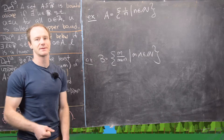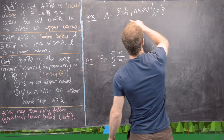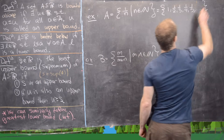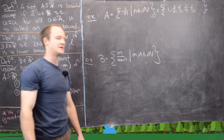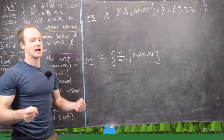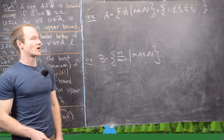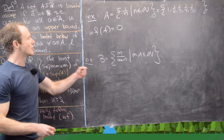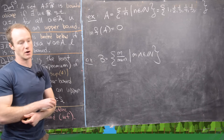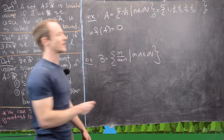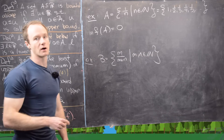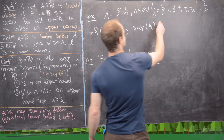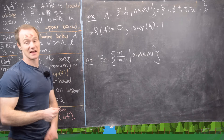Let's look at the set of reciprocals of all natural numbers: 1, 1/2, 1/3, 1/4, 1/5, and so on. The infimum, the greatest lower bound, is equal to 0. That's because if we pick any number bigger than 0, we can find an n where 1/n is less than that number, so it would no longer be a lower bound. The supremum, the least upper bound, is 1, because 1 is the largest element from the set.